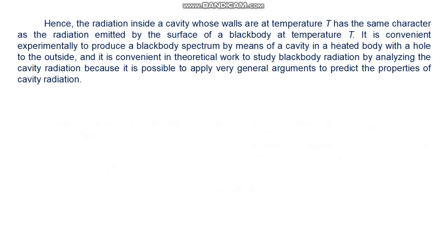Hence, the radiation inside a cavity whose walls are at temperature T has the same character as the radiation emitted by the surface of a black body at temperature T. It is convenient experimentally to produce a black body spectrum by means of a cavity in a heated body with a hole to the outside, and it is convenient in theoretical work to study black body radiation by analyzing the cavity radiation, because it is possible to apply very general arguments to predict the properties of the cavity radiation.